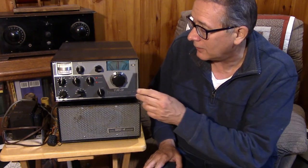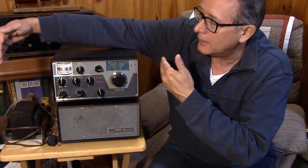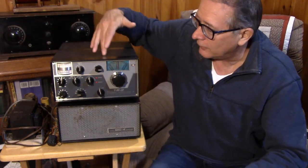We think of something like this as being gigantic today, but at the time, with the big dashboards, I know my first car, which was a 66 Chevy Bel Air, I fit a full-size National NCX-3 in it, and it was at least this wide. So this would have been an easy fit in some of those cars of the early 60s.